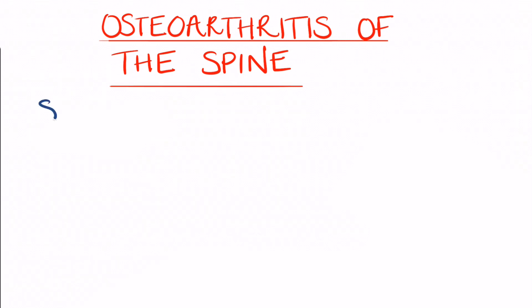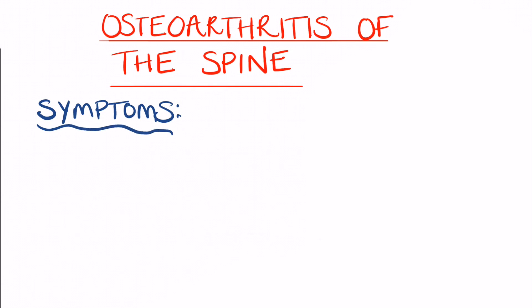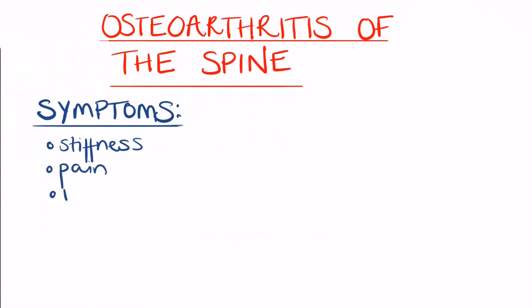Symptoms include pain in the neck or the lower back. Weakness and numbness may also occur in the legs or arms if there is spinal cord involvement, and usually the back discomfort can be relieved by a person lying down.